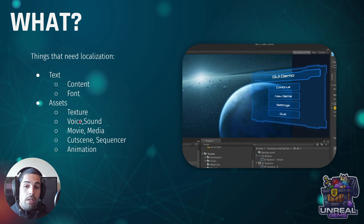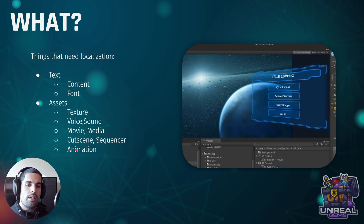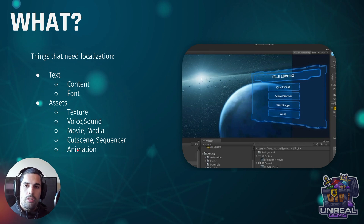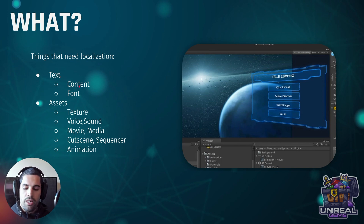We can also localize voice, sound, movies, and media. We can localize cutscenes, sequencer, and animation. For example, we could localize a skeletal mesh from a character so it looks different in different regions. That is quite useful, and is not as common as translating text, which is the first thing we think about when trying to localize something.